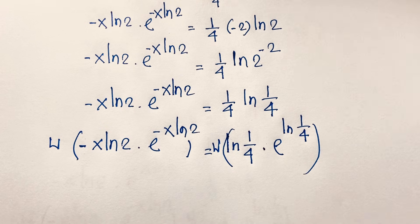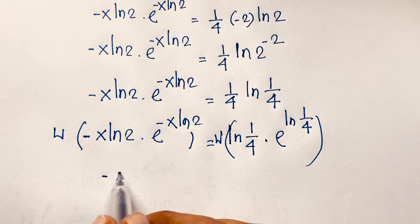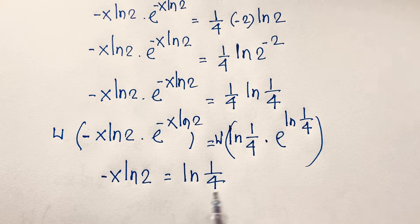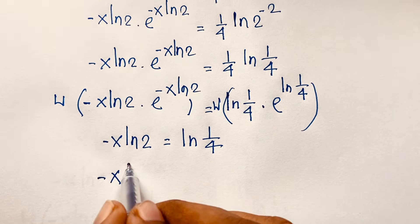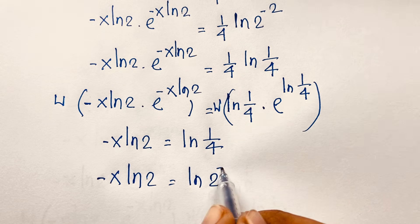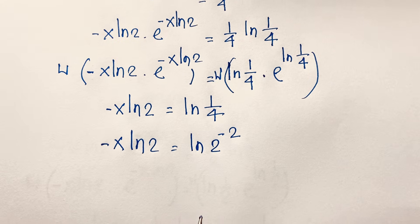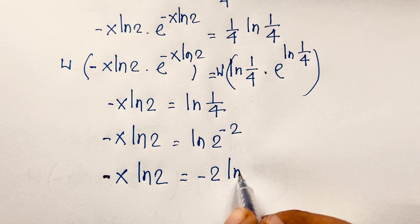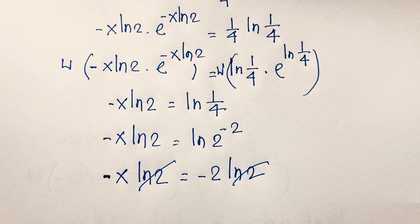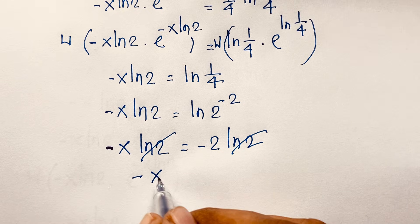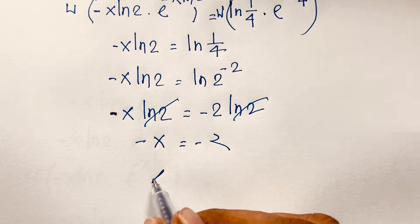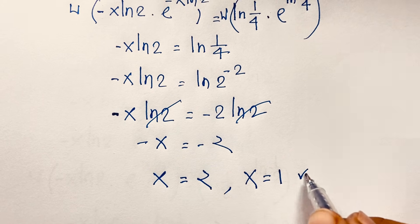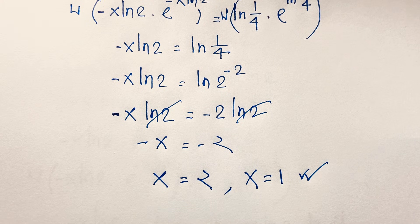Now applying the Lambert W function to both sides: minus x·ln2 equals ln(1/4). We write ln(1/4) as ln(2^(−2)), which equals minus 2·ln2. So minus x·ln2 equals minus 2·ln2. The ln2 terms cancel, and minus cancels minus, giving x equals 2. So our final answers are x equals 1 and x equals 2, the solutions to this Lambert W exponential question.